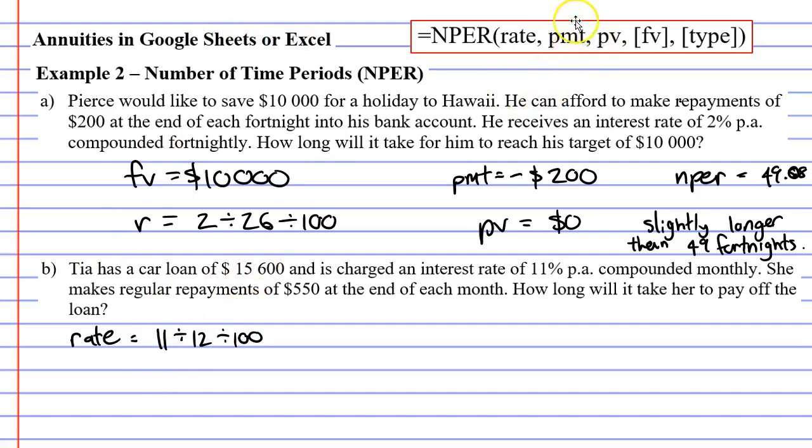The next thing we're looking at is our repayment, or PMT, and our repayment is $550. You'll also notice it says at the end of the month. That means our type is zero—zero for end of the month, one for beginning of the month. We also need to calculate our present value. In question B, Tia has a car loan of $15,600. This is right at the beginning, so that's our present value.